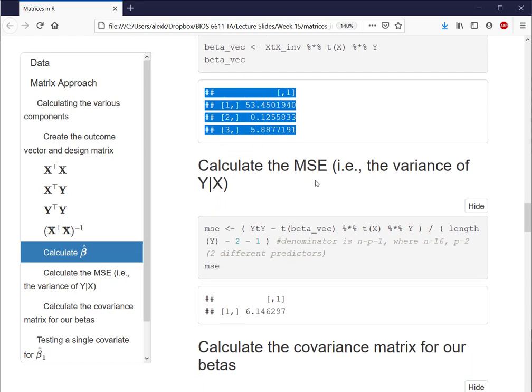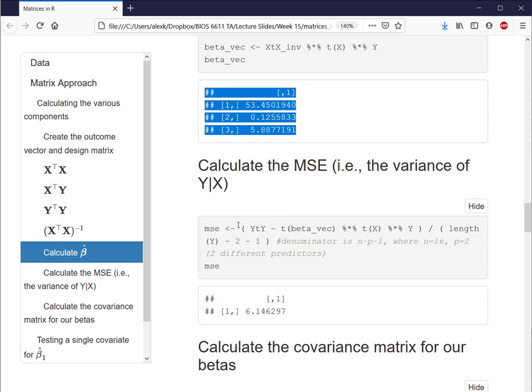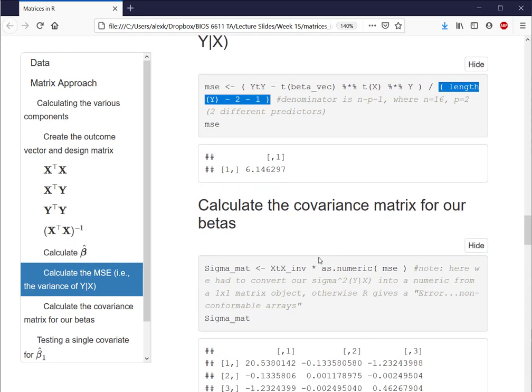We also want to calculate the mean square error, or that variance of Y given X, from our model, so that we can calculate the variance covariance matrix to use for inference of our beta coefficients. And so here we just see we're applying the formula that we have in our slides, and then dividing by our degrees of freedom of N minus P minus 1 for the mean square error.